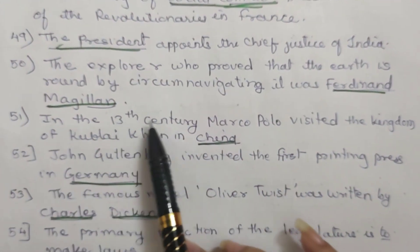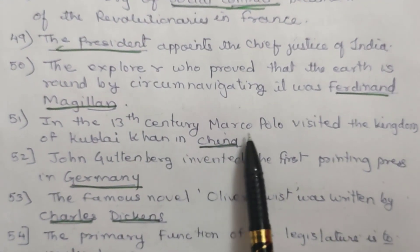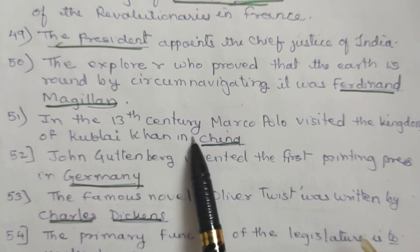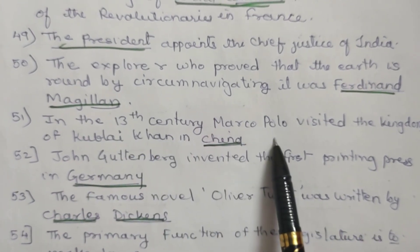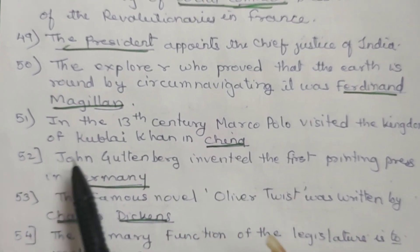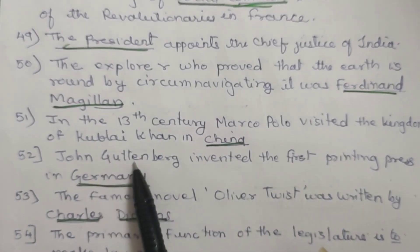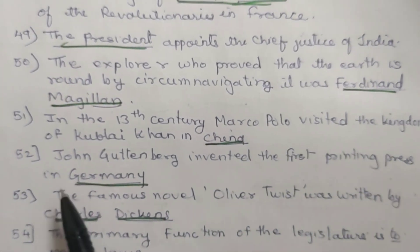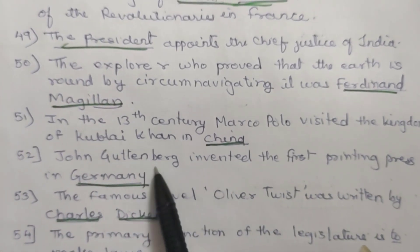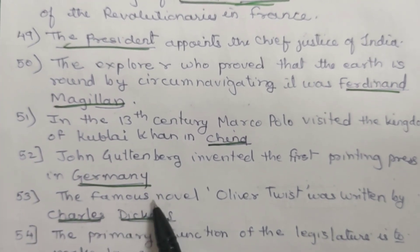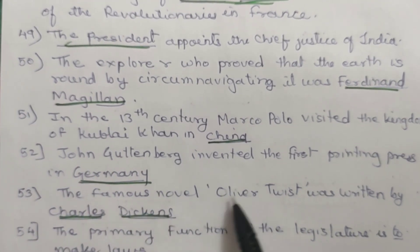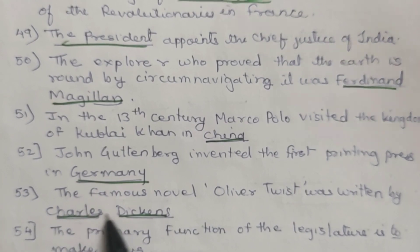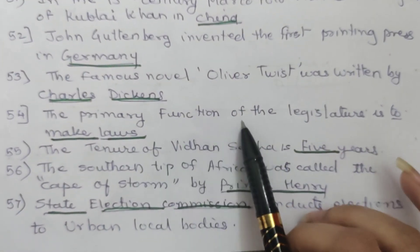51. In the 13th century, Marco Polo visited the kingdom of Kublai Khan in China. 52. John Gutenberg invented the first printing press in Germany. 53. The famous novel Oliver Twist was written by Charles Dickens.